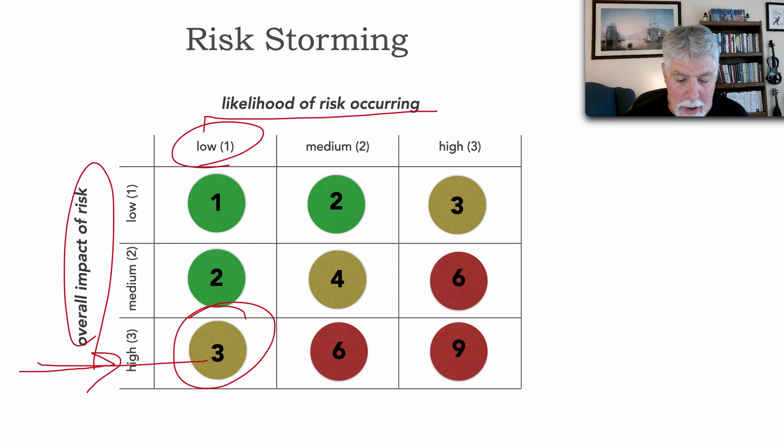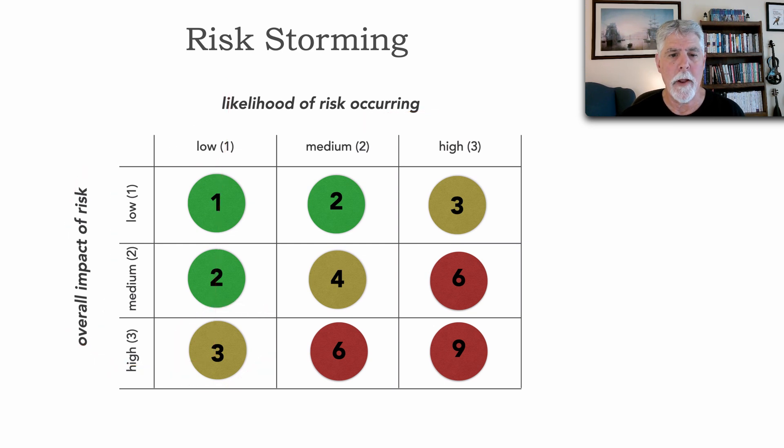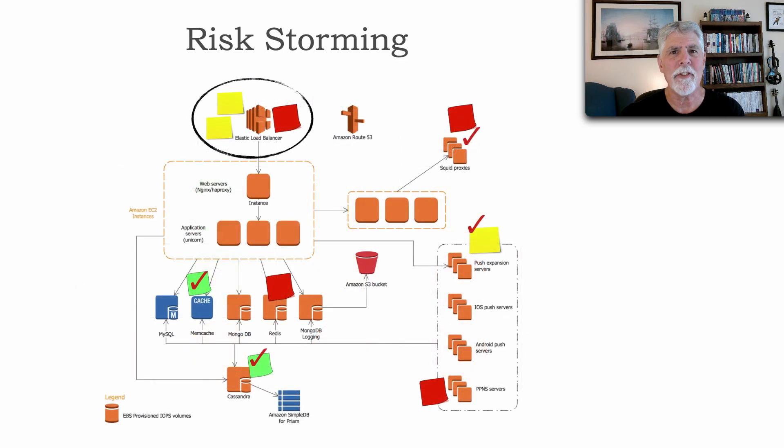And that's how this graph or this matrix actually works. It's impact over likelihood. So the person who put red there said, oh, okay, well, in that case, I agree with you. It is high impact, but I see that it's pretty low risk from a likelihood. So we'll put that at a medium. And we all agree. And that's kind of the process of risk storming.